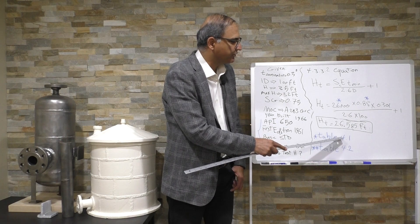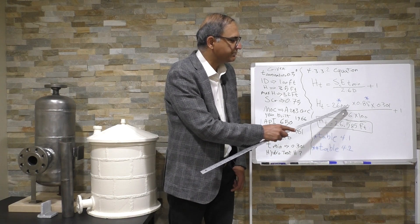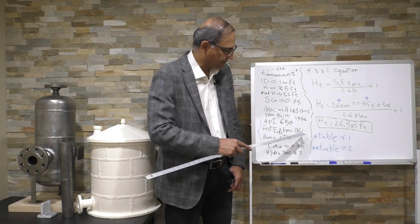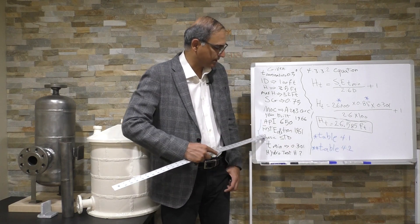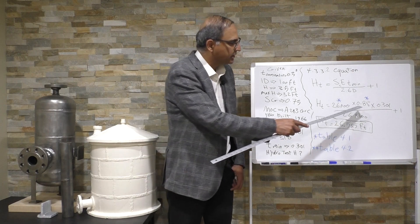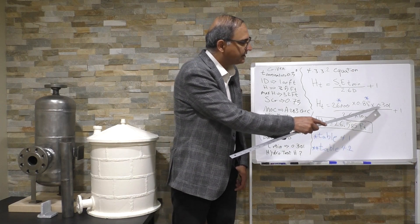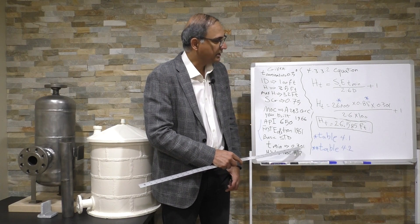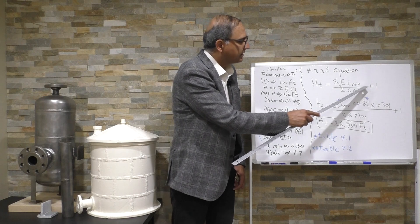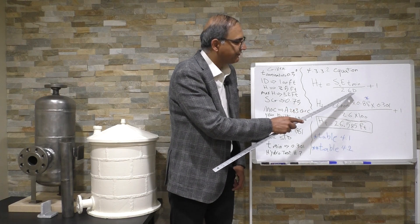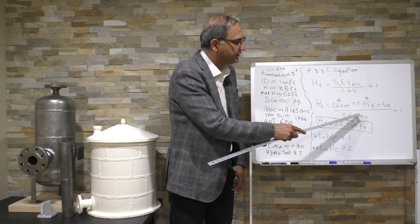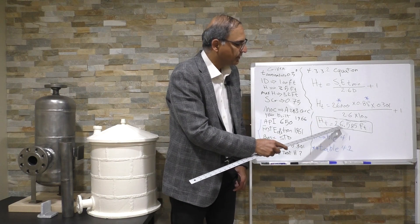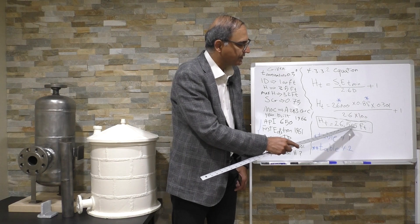We find the S value from table 4.1 is 26,000 PSI. Joint efficiency based on table 4.2, based on this information provided in the exam question, we are going to put in 0.85. T minimum is provided by the exam in the given, and then we have 2.6, a factor times the inside diameter, plus one. If you calculate this, it's going to come to 26.58 feet.